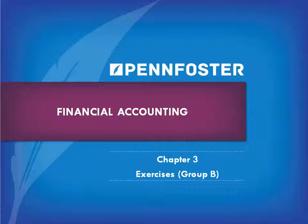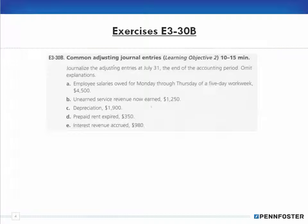Go back and watch the theory videos to help you out, and if you still don't understand something, feel free to contact an instructor. With that said, let's pick up with problem 3-30 — which I had completed in a previous recording and now have to do all over again, but c'est la vie. It says: journalize the adjusting entries at July 31st, the end of the accounting period; omit explanations.